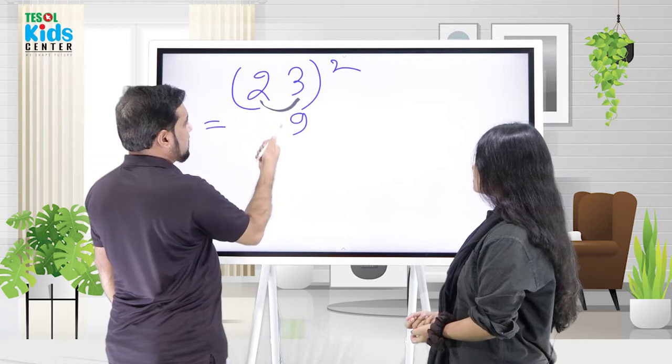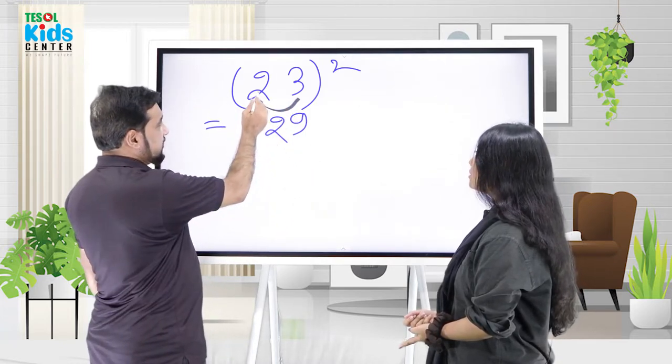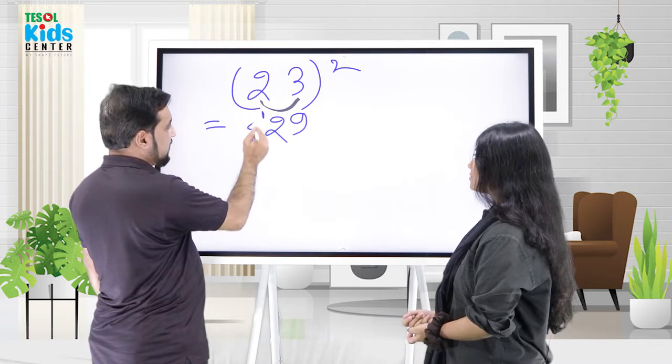Good girl! Now try 23 squared. 9, then 6 doubled is 12, write 2 and carry 1. Then 4 plus the carry equals 5. So 529, exactly, done!